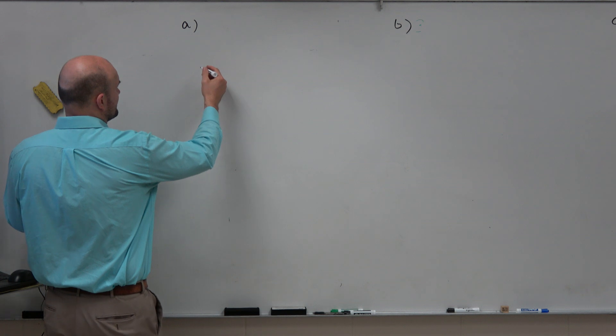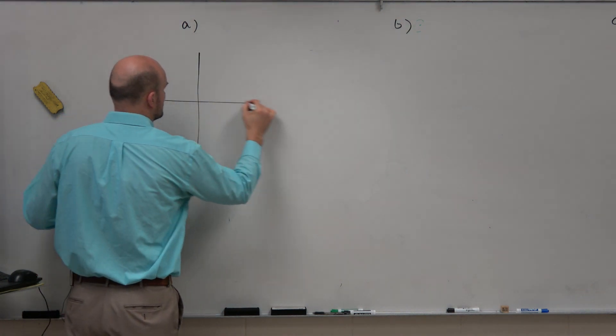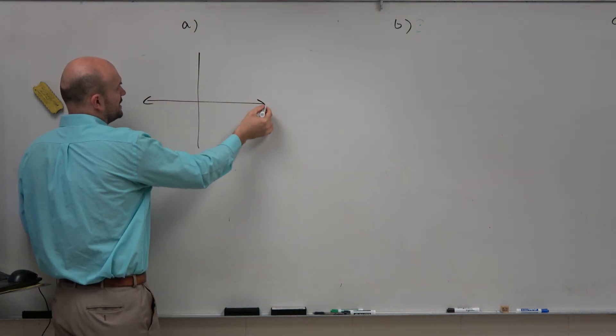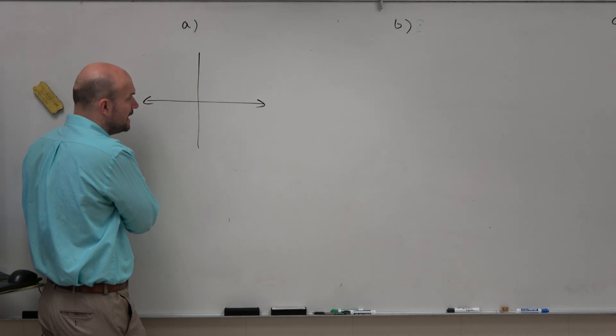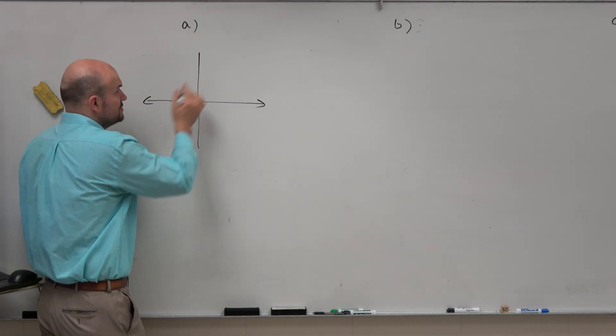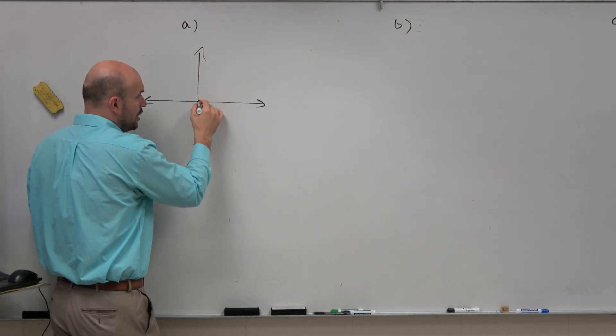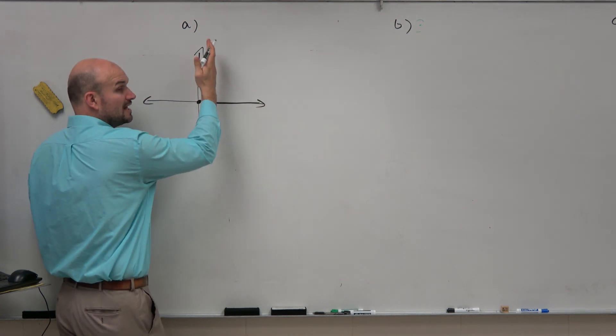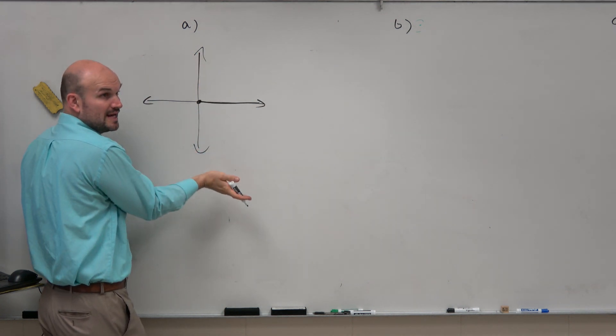So again, guys, to graph angles is relatively basic. If we're going to be graphing 400 degrees, just go to do what you know. If we're doing standard form, we're always starting here, right? And again, counterclockwise is positive, clockwise is negative.